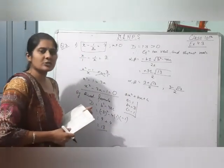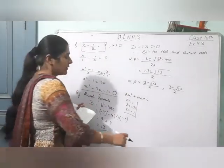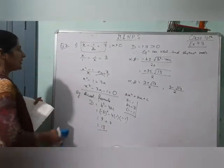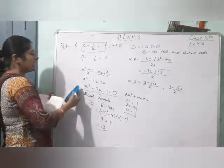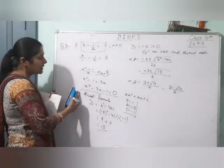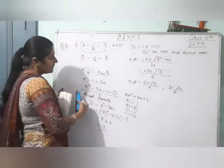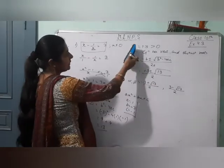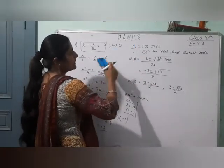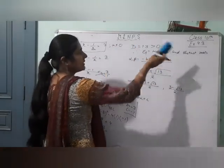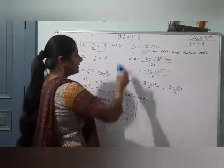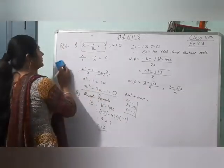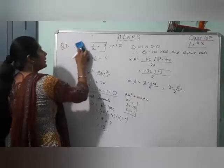So like this, you have to solve this question. Just taking the LCM, forming the equation, calculating D. D is greater than 0, which means real and distinct roots. Then calculating the value of alpha and beta.